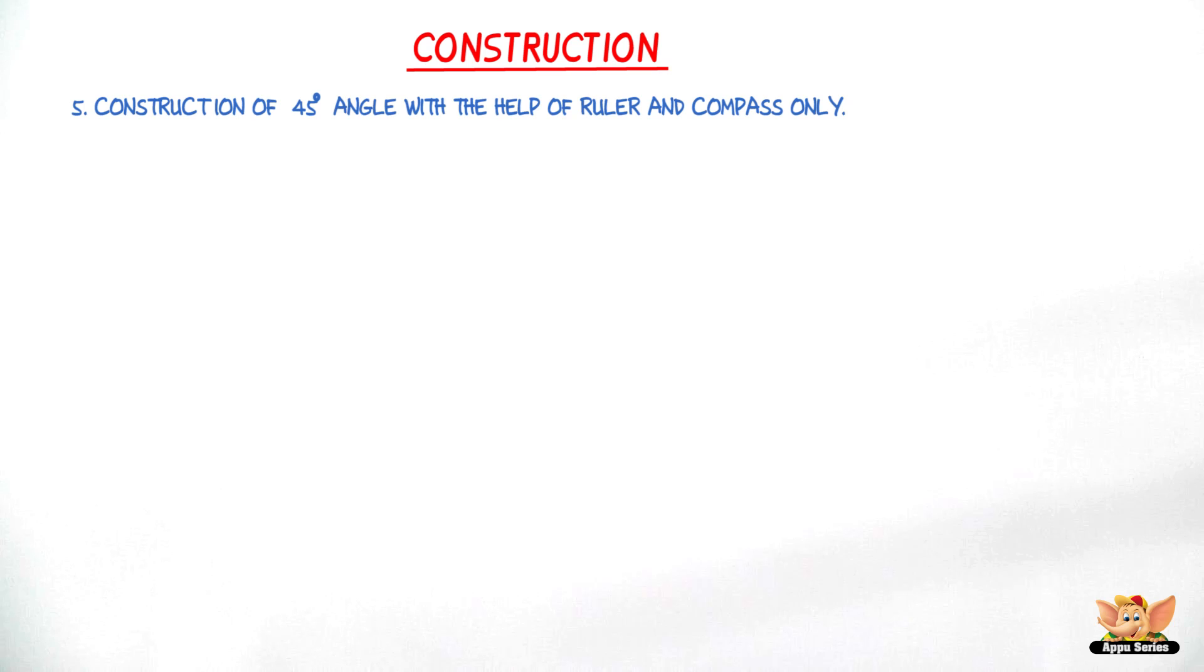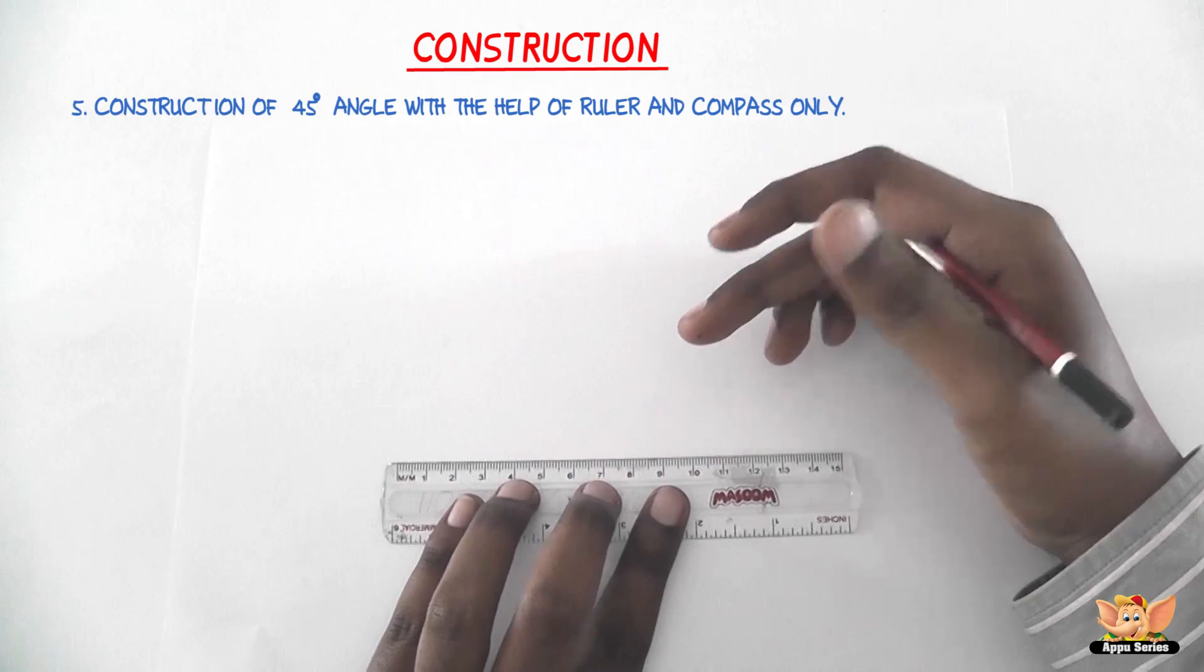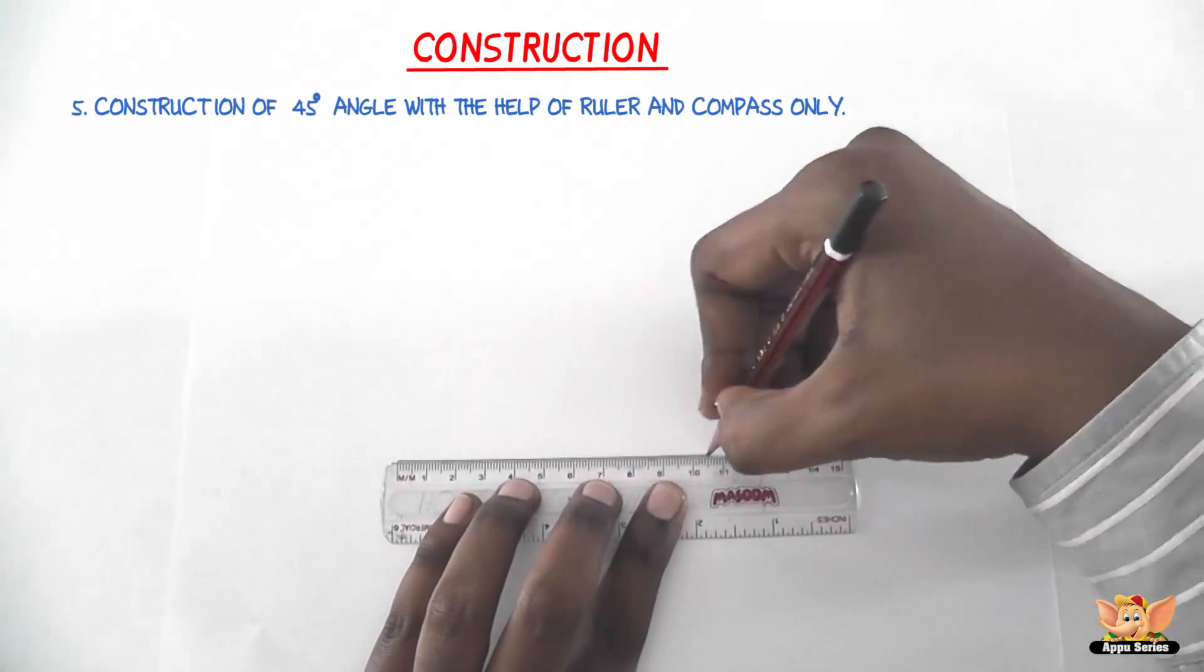So first, let us draw the angle of 90 degrees as we just did in the previous video. The first step to draw the 90 degrees is draw a ray OA of any convenient length.